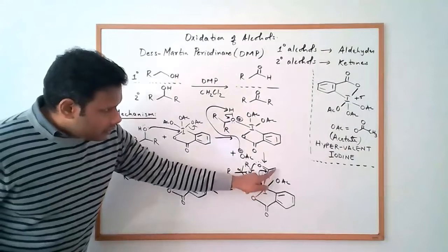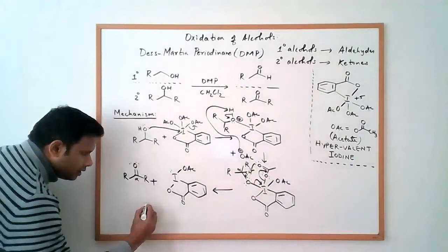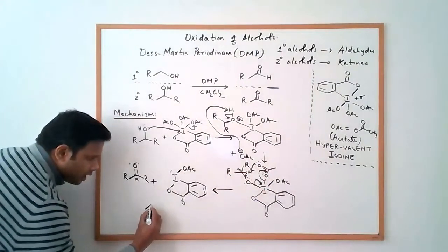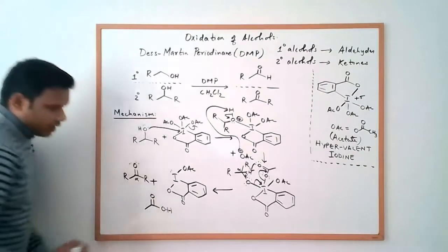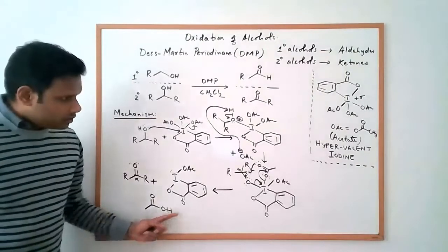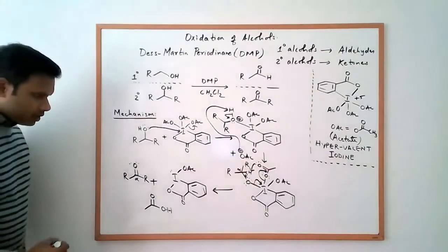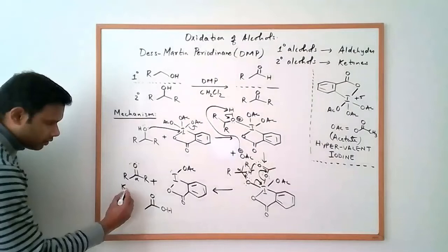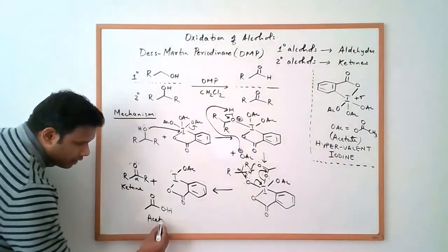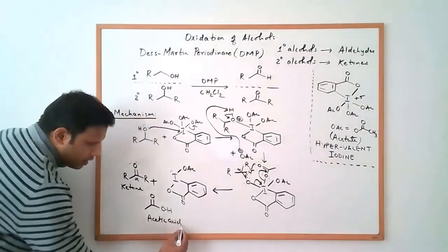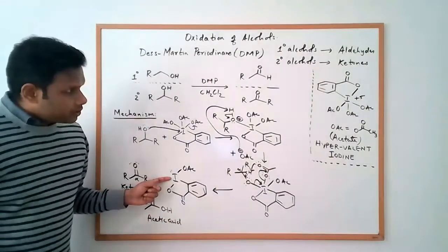And in addition to that, this fragment here, the acetate group, that becomes an acetic acid. It comes off as this. So that's the hydrogen from this alpha carbon, which that acetate group deprotonated. So we get our ketone, we get acetic acid, and what we can call a reduced iodine reagent.